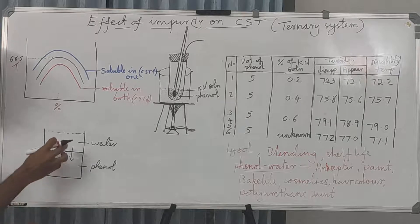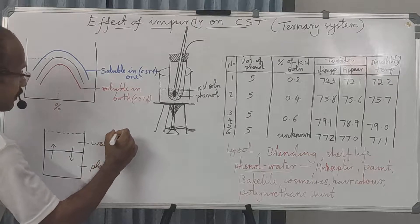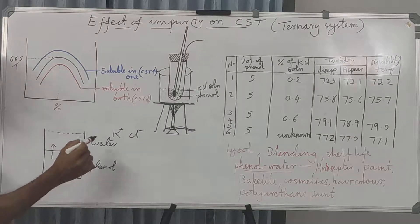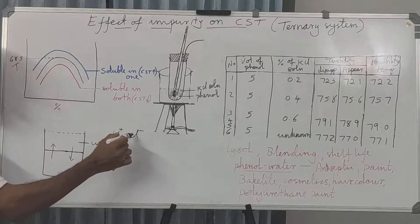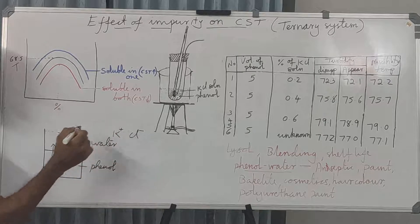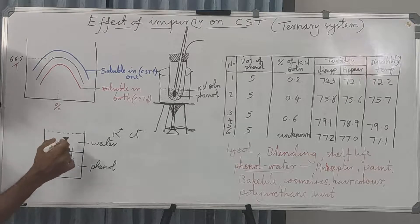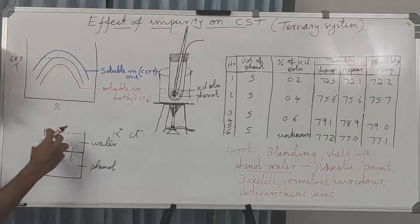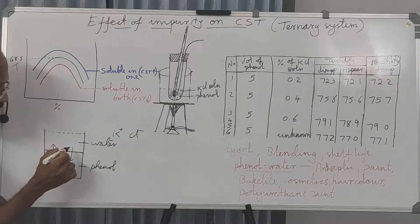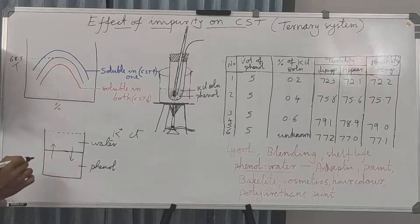Now, suppose we consider adding one impurity material — for example, KCl — to the system. KCl is an ionic compound and will be soluble only in water. KCl will dissociate into K⁺ and Cl⁻ ions, which will be stabilized in water due to solvation, making the water layer more stabilized. This means the entry of water molecules from the stabilized water layer into the phenol layer will be reduced.